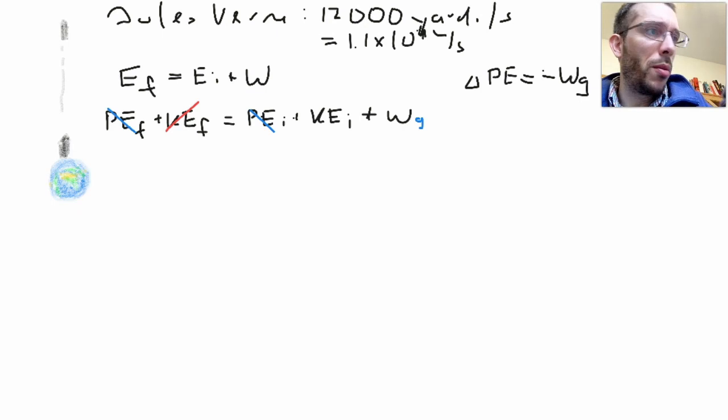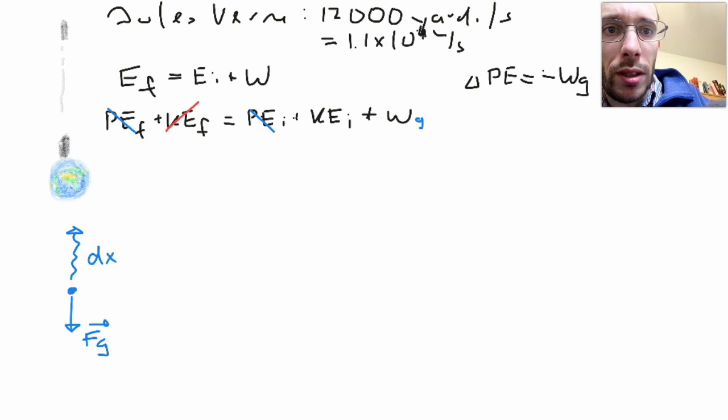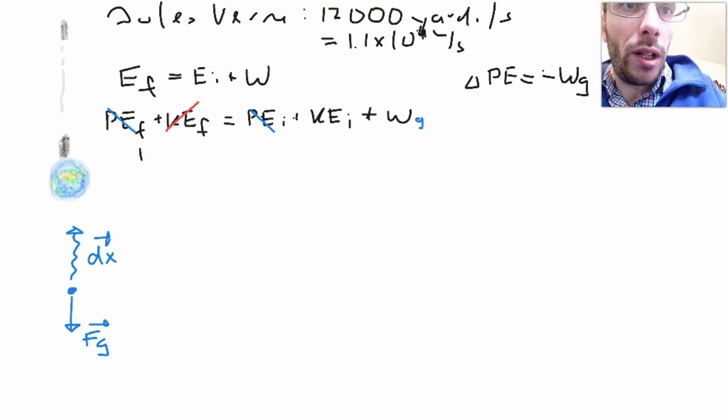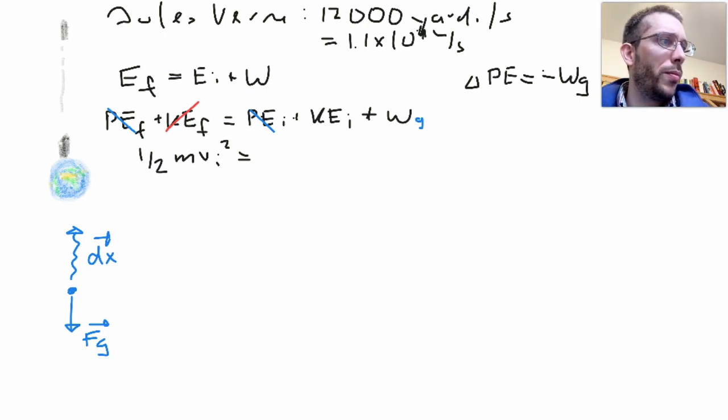If I do my free body diagram here of my projectile that I'm going to be shooting up, I'm going to have gravity pulling back down to the earth, and we're traveling in upward direction. Let's call this dx. So if I simplify this equation, what I'm going to get is that the kinetic energy initial, so the one-half mv initial square is equal to minus the work done by gravity.